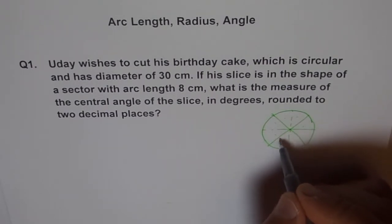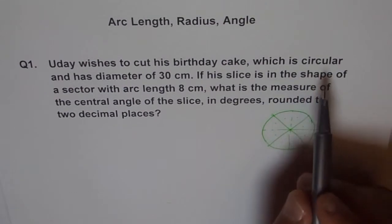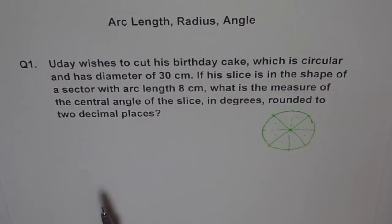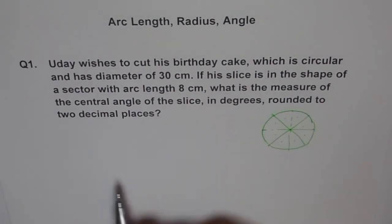So that means we have 8 slices. 1, 2, 3, 4, 1, 2, 3, 4. So we have 8 slices. Has a diameter of 30 cm. So diameter is 30 cm. So from here to here it is 30 cm.